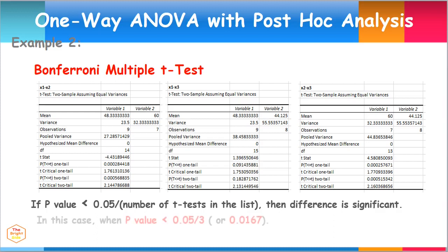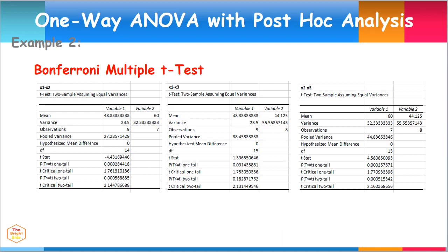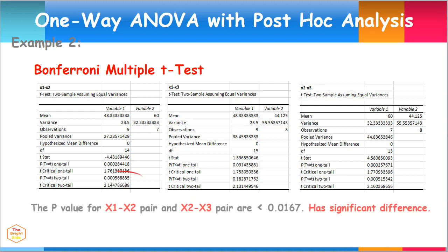This decision rule applies when the P value is less than 0.05 divided by 3, or 0.0167, the difference is significant. Notice that the difference is significant in the X1-X2 pair and the X2-X3 pair, since both of their P values are less than 0.0167.